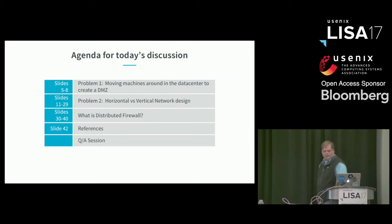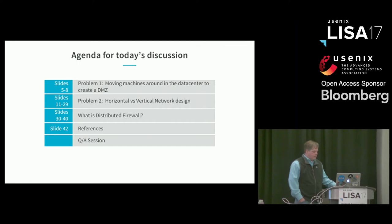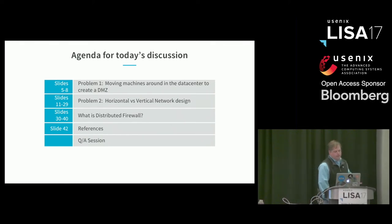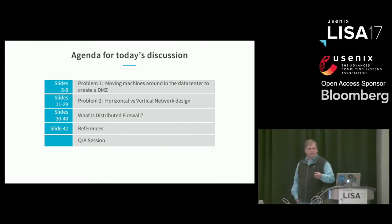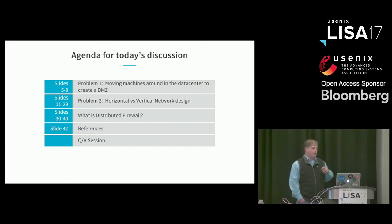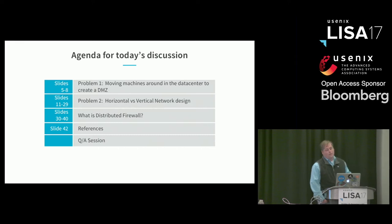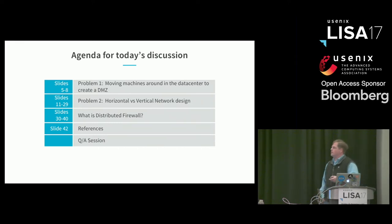This is what we'll talk about today: what are some of the problems that LinkedIn faced, why did we look at creating this technology — specifically moving machines around the data center — and we'll dive into horizontal versus vertical network architectures. Finally, what is this technology that we're talking about?